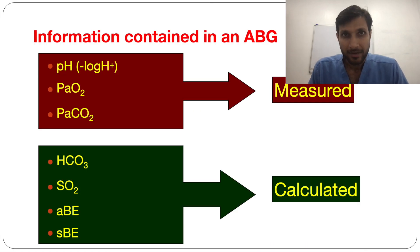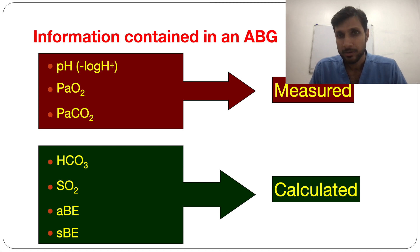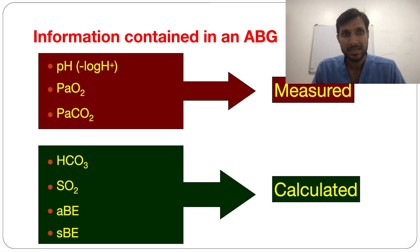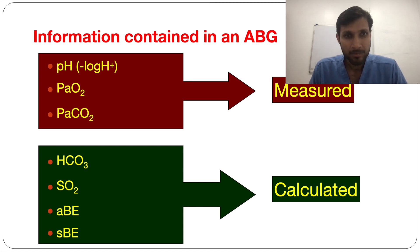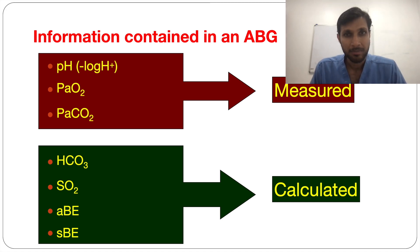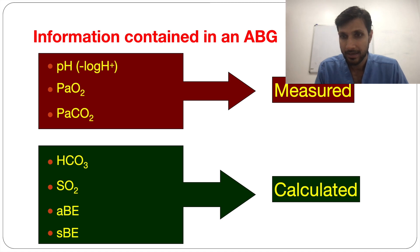The information contained in ABG may be measured values and calculated values. pH, PO2, and PCO2 are measured values, while bicarbonate, saturation of oxygen, and base excess are calculated values.